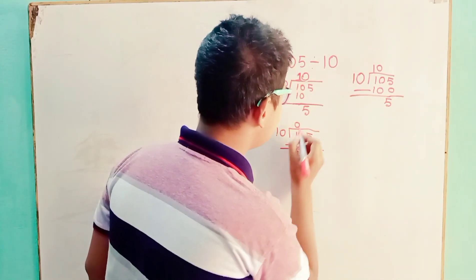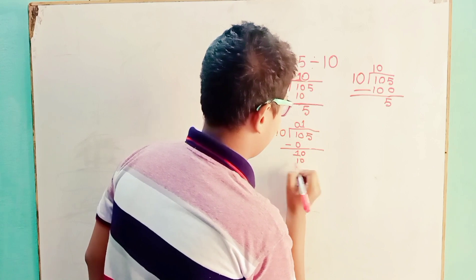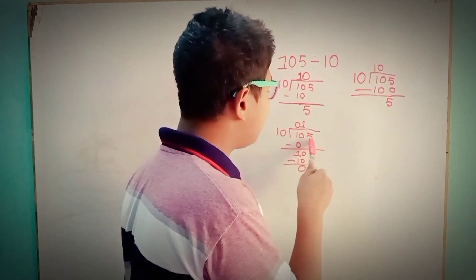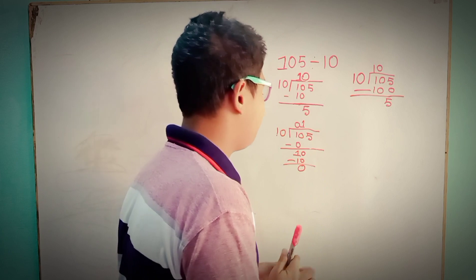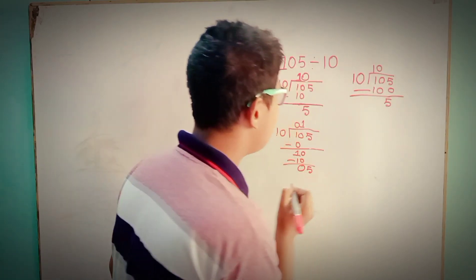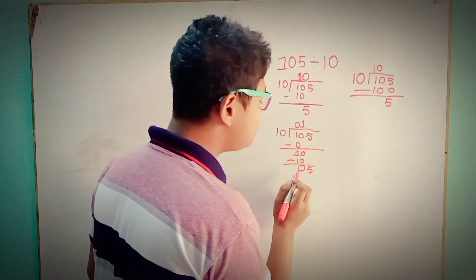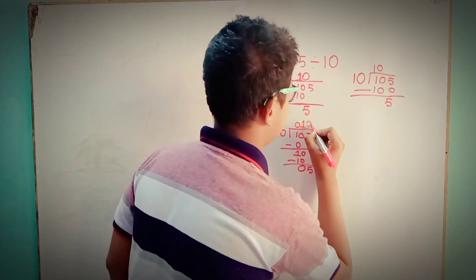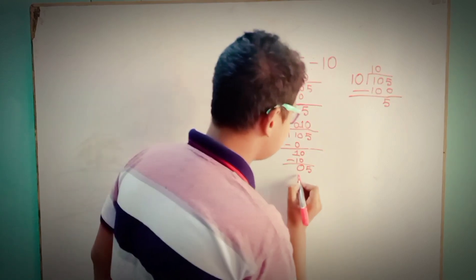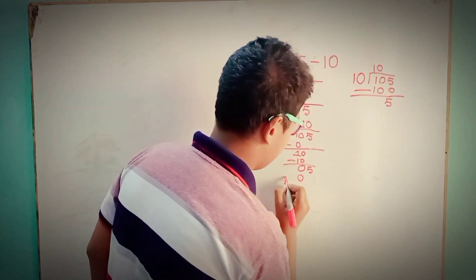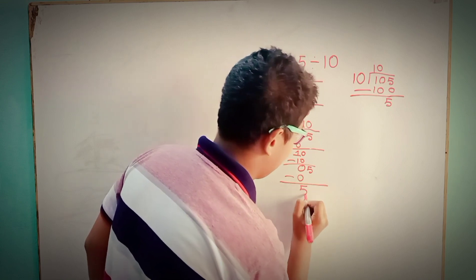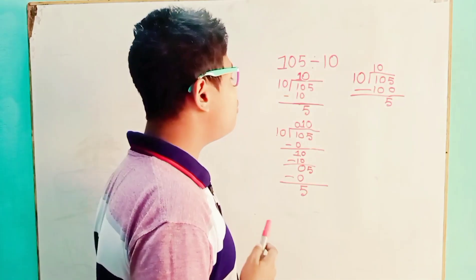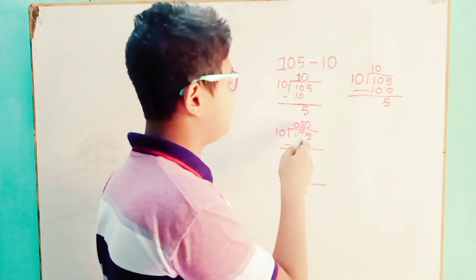10 ones are 10. 10 minus 10 equals 0. Now move down the last digit, 5. We get 05. 10 goes into 05 zero times. We are done because there are no more digits to move down from the dividend.